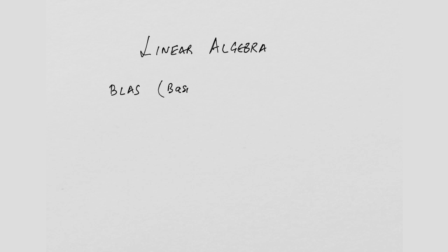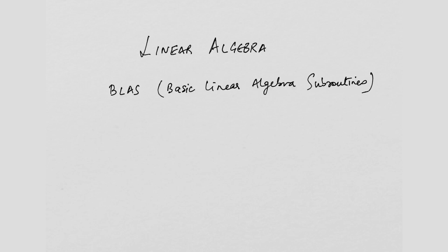Let us start with something very simple. At the most basic level, there are three different categories of linear algebra operations. There is actually a library called BLAS — Basic Linear Algebra Subroutines — and this is heavily used in a lot of scientific computations.